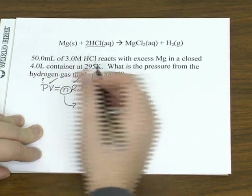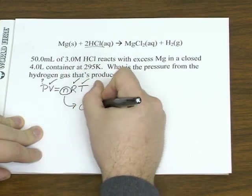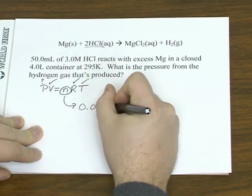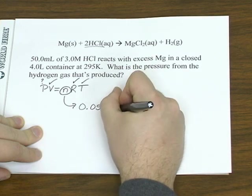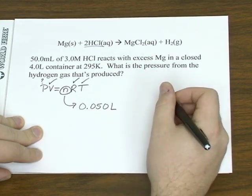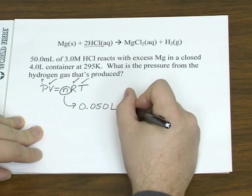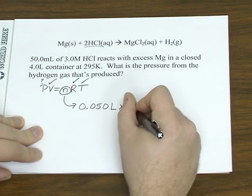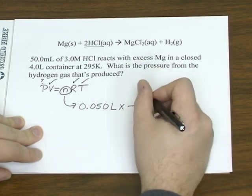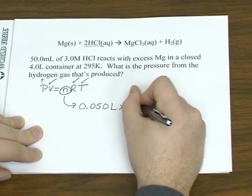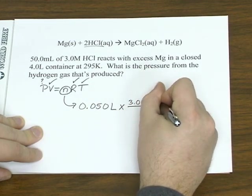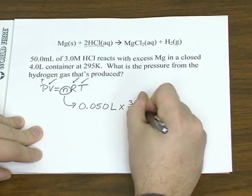So we're given a volume of a known molarity. So you take that 50 milliliters, convert it to liters, which would be 0.05 liters. 3 molar means you've got 3 moles of that substance per 1 liter.